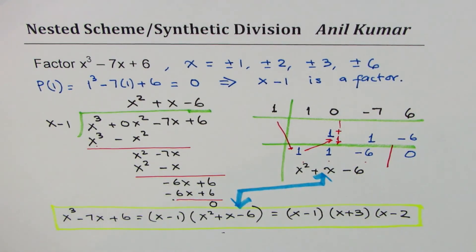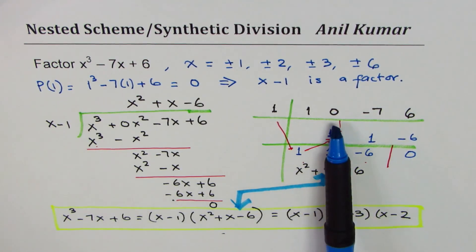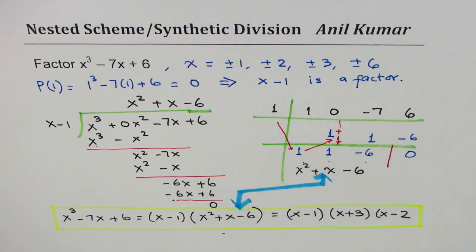So in following videos we might just do synthetic division. So I hope this example introduces you fairly well to nested scheme or synthetic division. Also remember, if there are missing terms as there was in this particular case for x square, we have to use a placeholder so that the process can be done smoothly. I hope that really helps. Feel free to post your comments, share my videos, and all the best. Thank you.